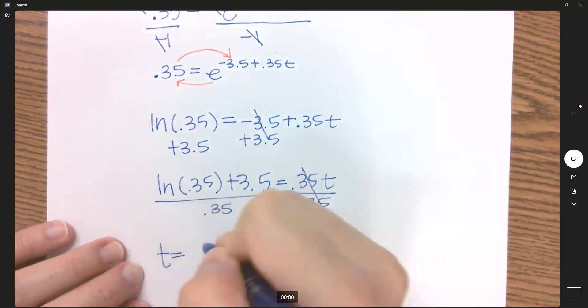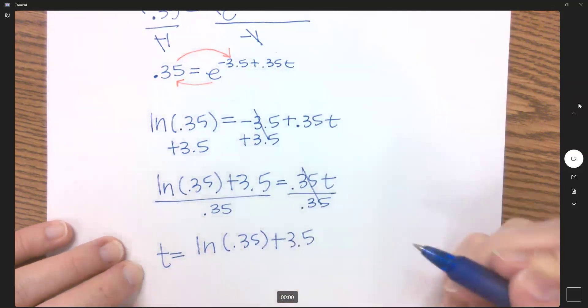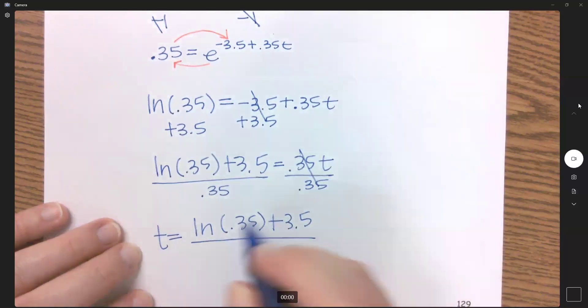So I've got t equals the natural log of 0.35 plus 3.5, all over 0.35.